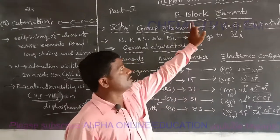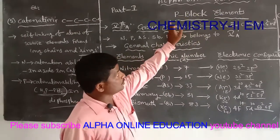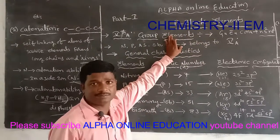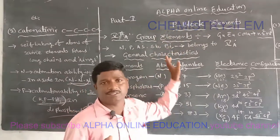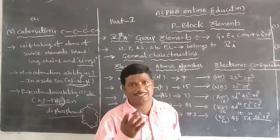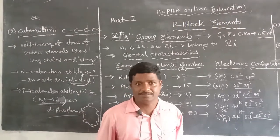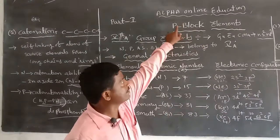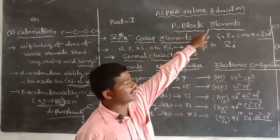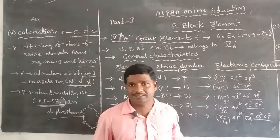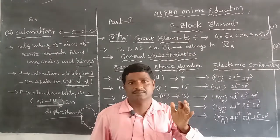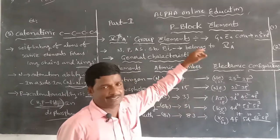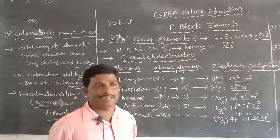Today we are going to start our new chapter: p-block elements. In the modern periodic table, the elements are classified into four blocks based upon their electron configuration. Those are: first, the s-block elements; second, the p-block elements; third, the d-block elements; and fourth, the f-block elements.